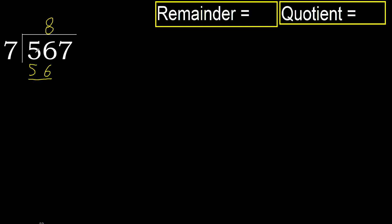Subtract 56 minus 56 equals 0. Next. Eliminate 0 here.